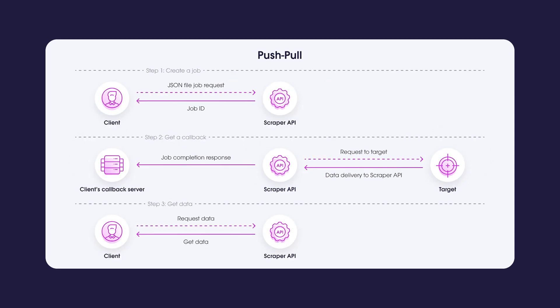Unlike real-time and proxy endpoints, push-pull is an asynchronous integration method. With the push-pull data delivery method, you don't have to keep an open connection. Instead, you can wait for the job to be complete and retrieve the result at your own convenience. It's also possible to check the job status. Similar to real-time, you need to submit a JSON file with the job description. If you include a callback URL in your job description, once the job is done, we will post a message to your callback server saying that the job has been completed, and then you can download the results within the next 24 hours. Compared to other integration methods, push-pull is a bit more complex but offers richer functionality.